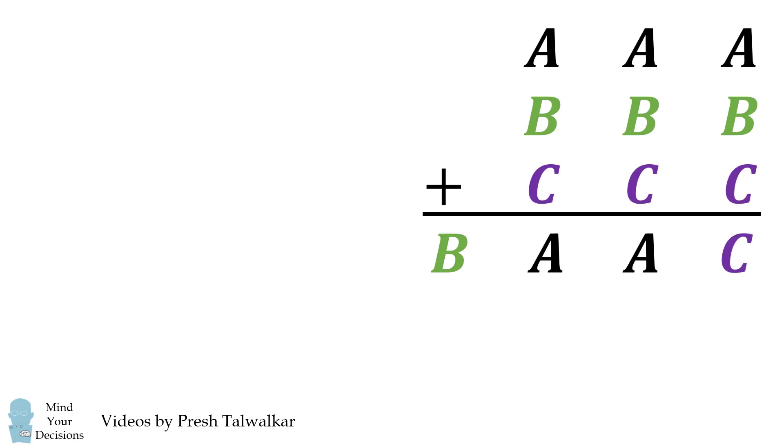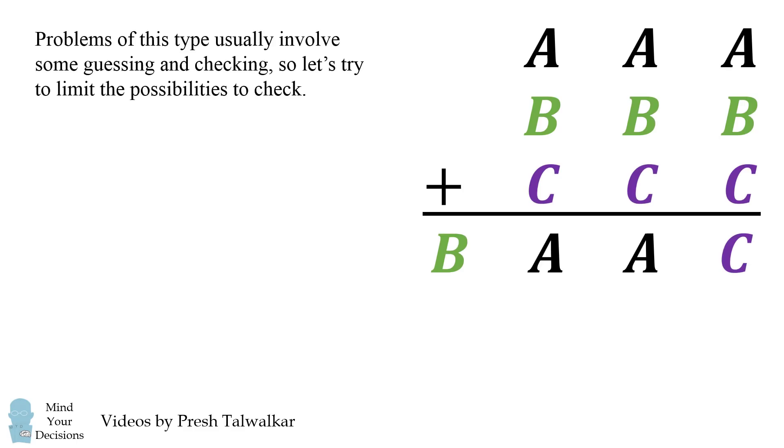So how can we solve this addition problem? Problems of this type usually involve some guessing and checking, so let's try to limit the possibilities to check. The first thing we can do is imagine we have the largest possible values for A, B, and C. This would be 999 plus 888 plus 777. This results in a sum of 2664. This is the largest possible value for BAAC.